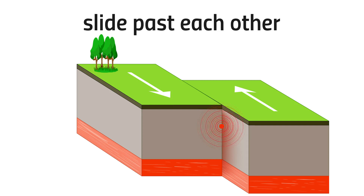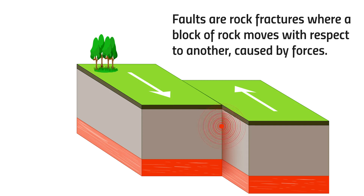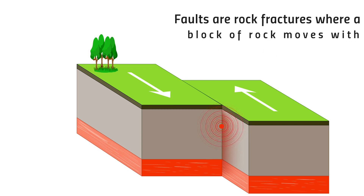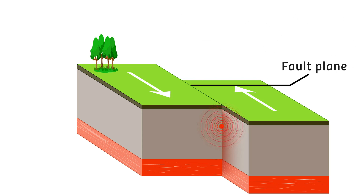it causes an earthquake. Faults are rock fractures where a block of rock moves with respect to another, caused by forces. The rock surface along which fault movement takes place is called the fault plane.